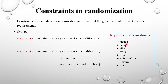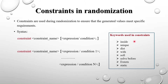So what are constraints? Constraints are used during randomization to ensure that the generated values meet specific requirements. Whenever we want to generate randomized values in such a way that they meet our requirements, we can use constraints by adding a constraint block inside our class.